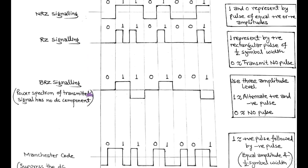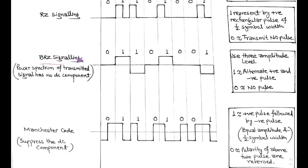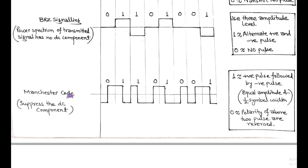Next is BRZ signaling, called bipolar return to zero. In this, three amplitude levels are used. Symbol 1 is represented by alternate positive and negative pulse, while for symbol 0, there is no pulse. Also in BRZ signaling, there is no DC component in the power spectrum of transmitted signal.